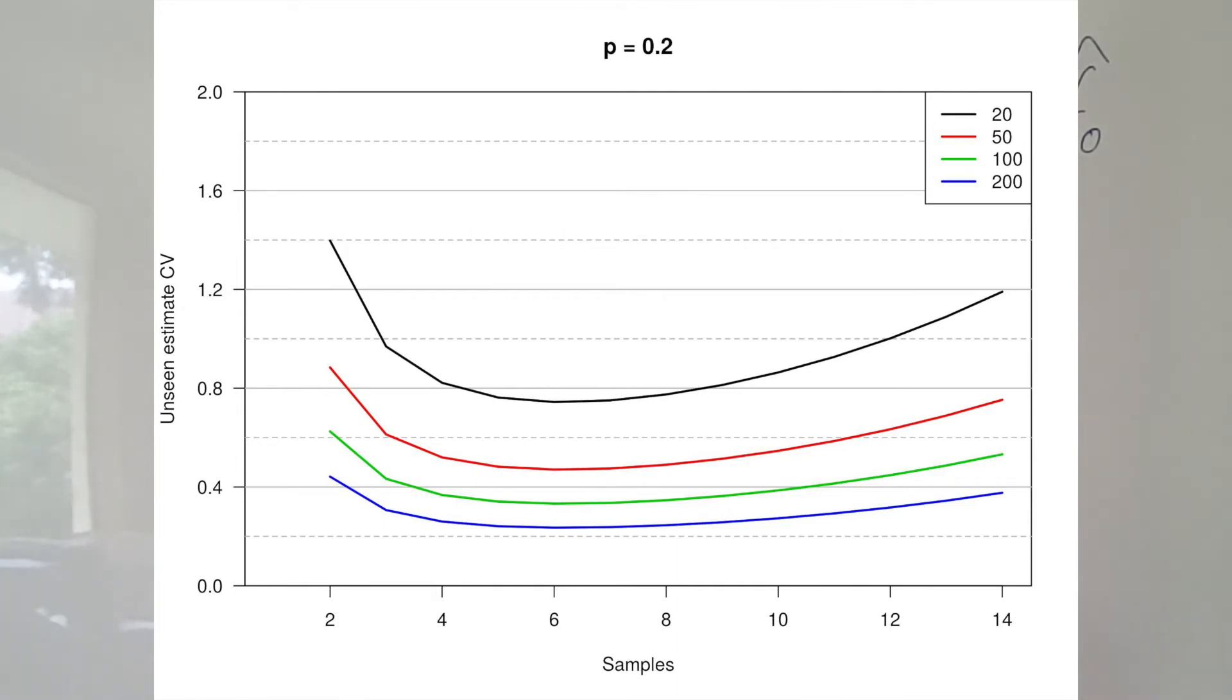And also note that all of those lines are essentially parallel, or at least they all have a minimum at the same place. What that suggests is that it doesn't matter what the population size is, there is some sort of magic number of repeat surveys you want to take in order to minimize our coefficient of variation on the number of unseen animals that we're estimating.